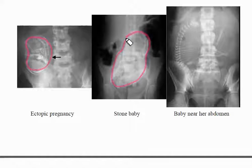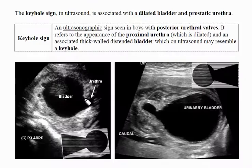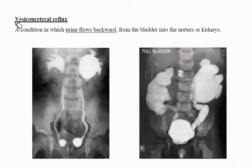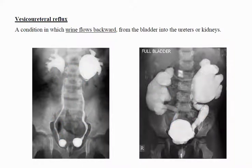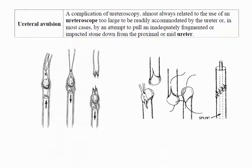The urethra is a tube that passes urine from the bladder out of the body; it goes through the prostate, external sphincter, and penis. The keyhole sign on ultrasound is associated with a dilated bladder and prostatic urethra. Vesicoureteral reflux is a condition in which urine flows backward from the bladder into the ureters or kidneys. Urinary tract infections include examples such as cystitis and staghorn calculi.